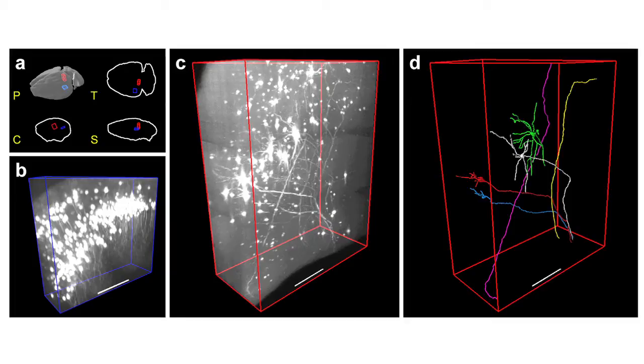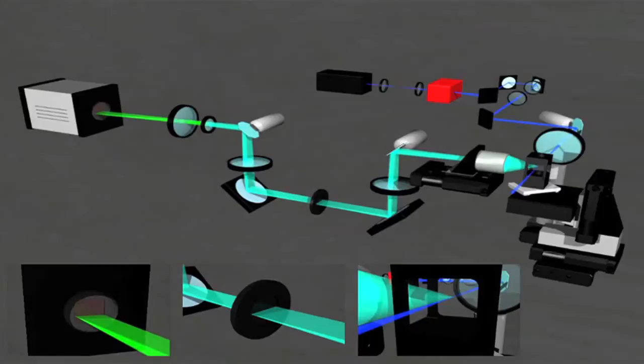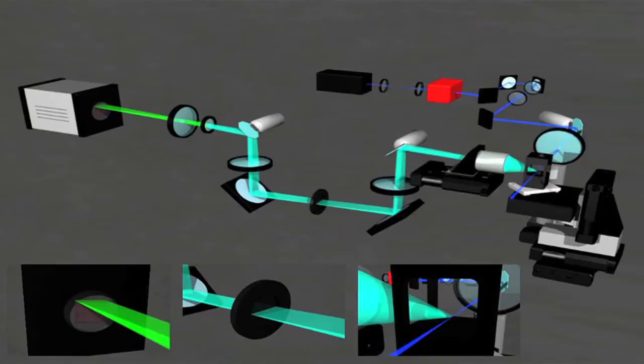The imaging we are using exploits the interaction of laser with matter, and the possibility to penetrate deep into the brain by means of non-linear effects, by clearing the brain and making it transparent. This is, of course, an ex vivo approach.